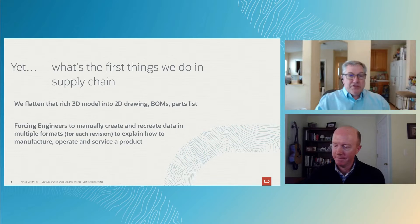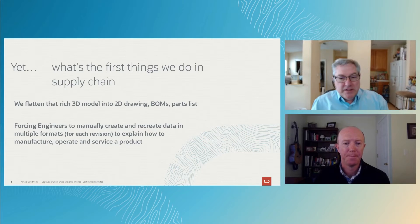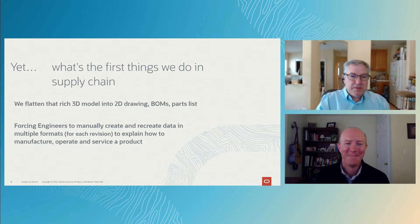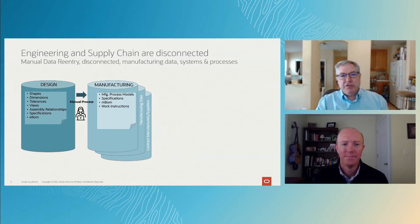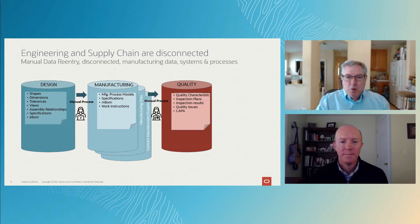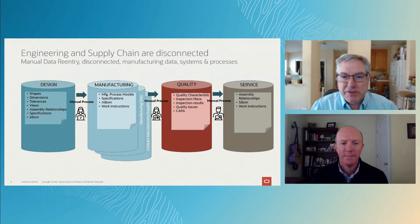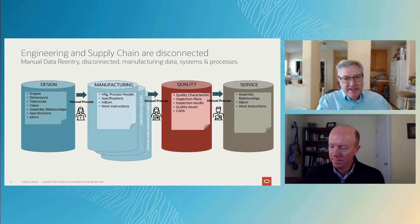I've got all this great information on the engineering side, and then I convert it into 1980 format for supply chain to operate. So you've got all this rich information — shapes, dimensions, tolerances — and then you manually create your manufacturing work instructions, your manufacturing BOM, and all the information you need to manufacture the product. Then you manually create your quality characteristics and inspection plans, and manually do the same on the service side. You've got all this rich information that could automate a lot of these downstream processes and create a better digital thread — and instead what we've got is a set of manual processes and a disconnected digital thread.